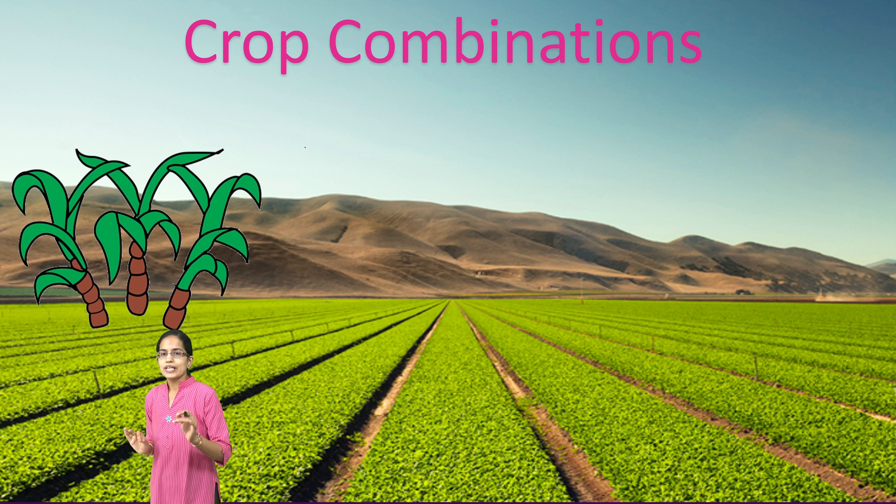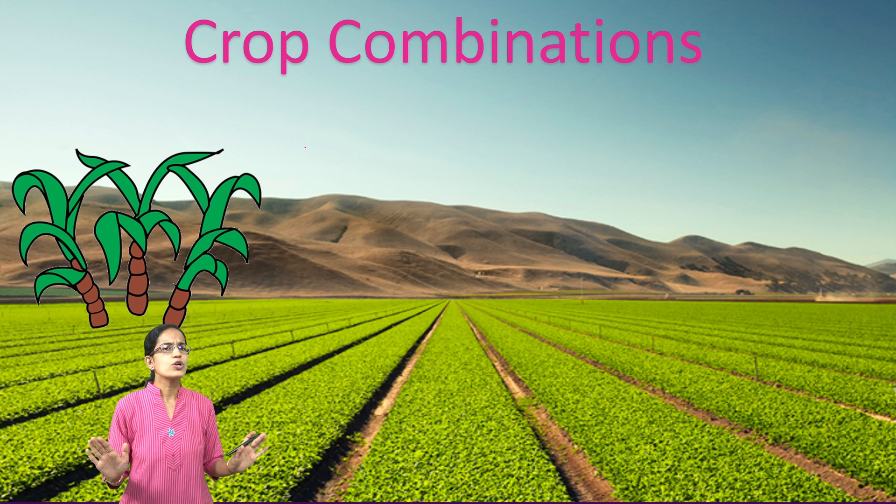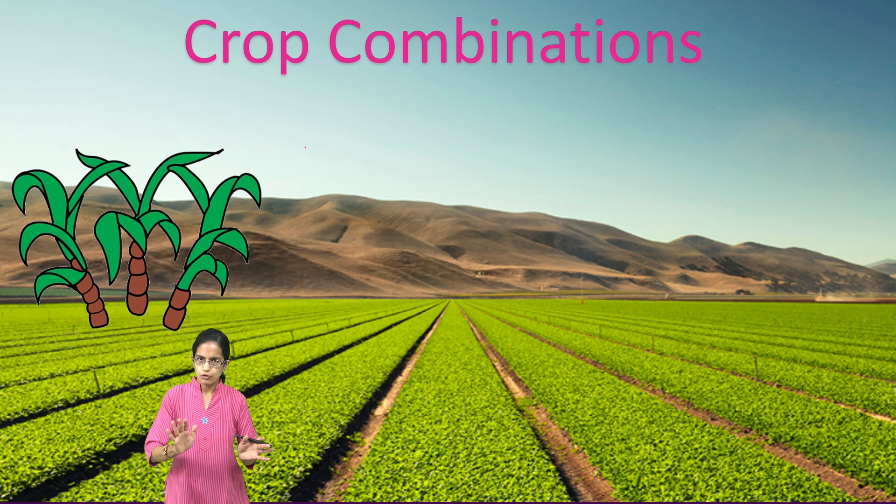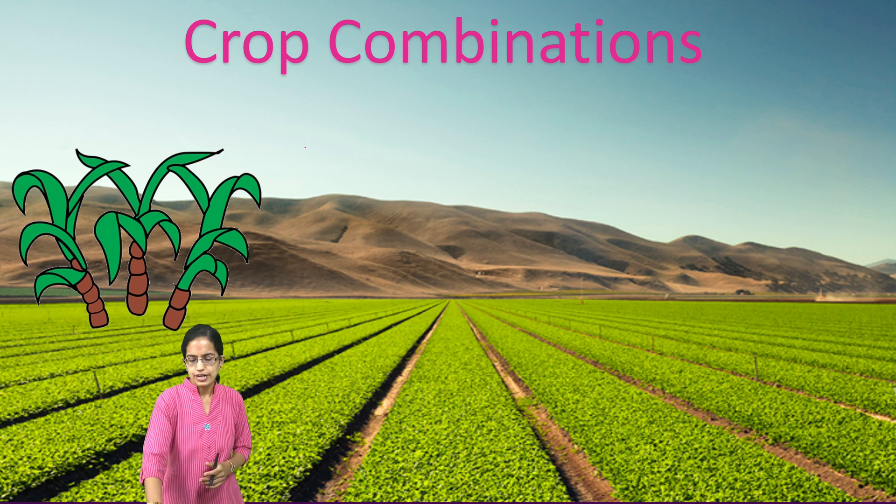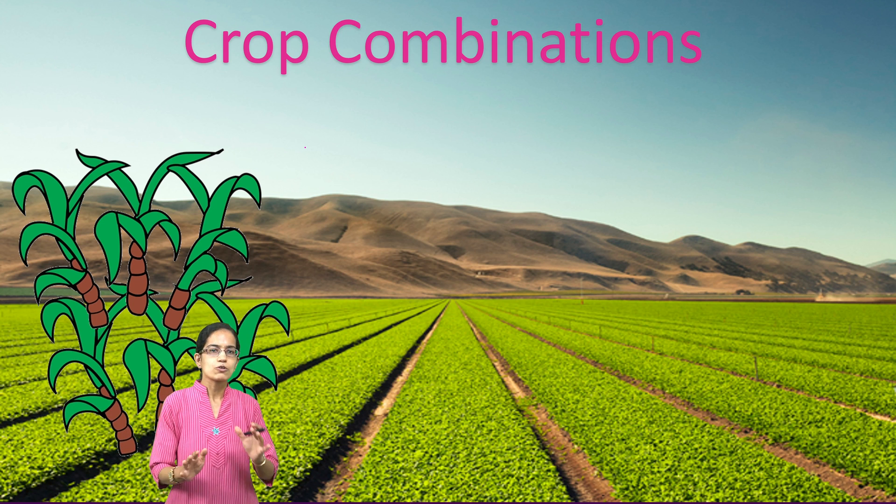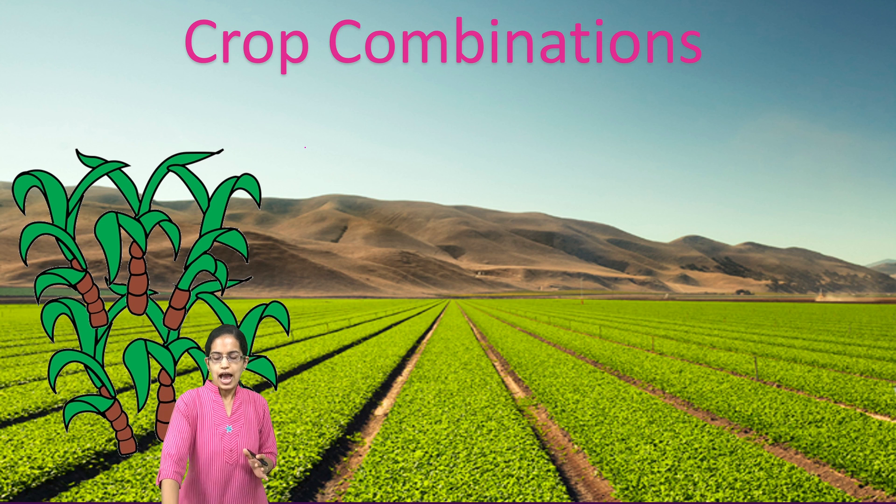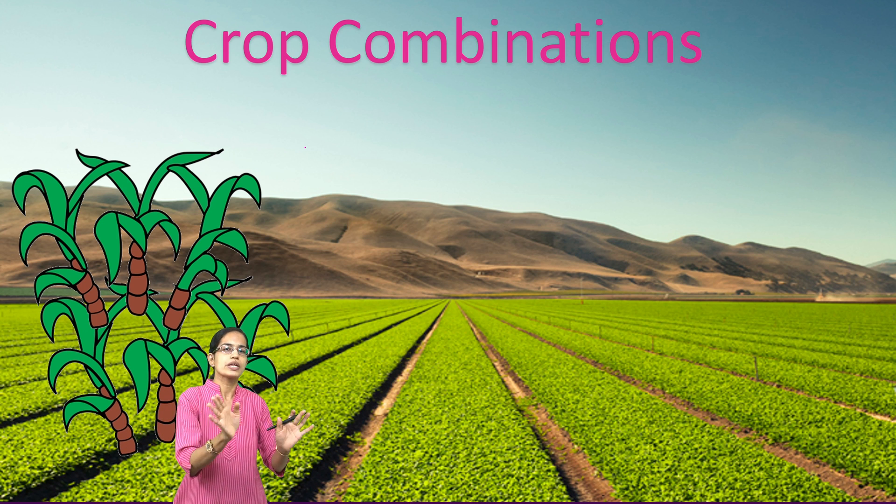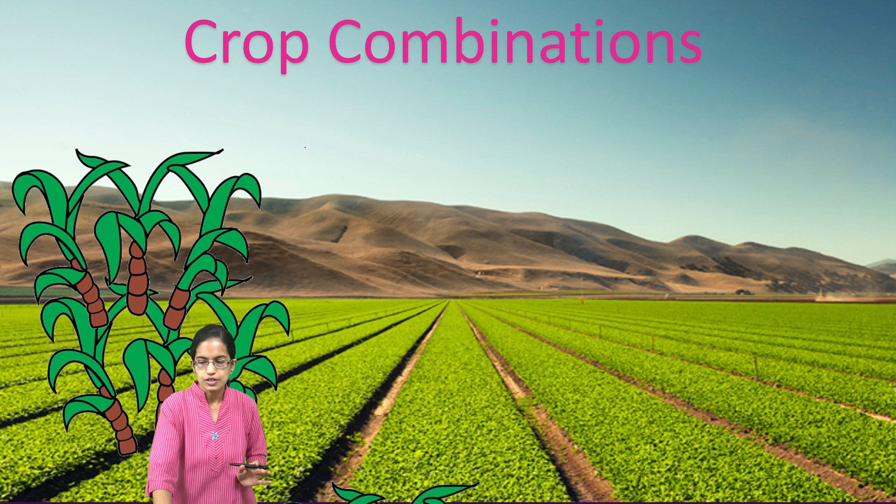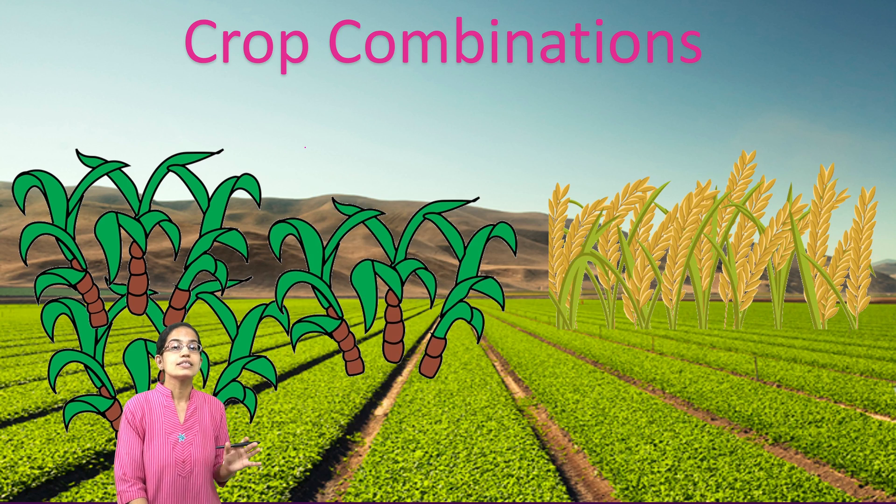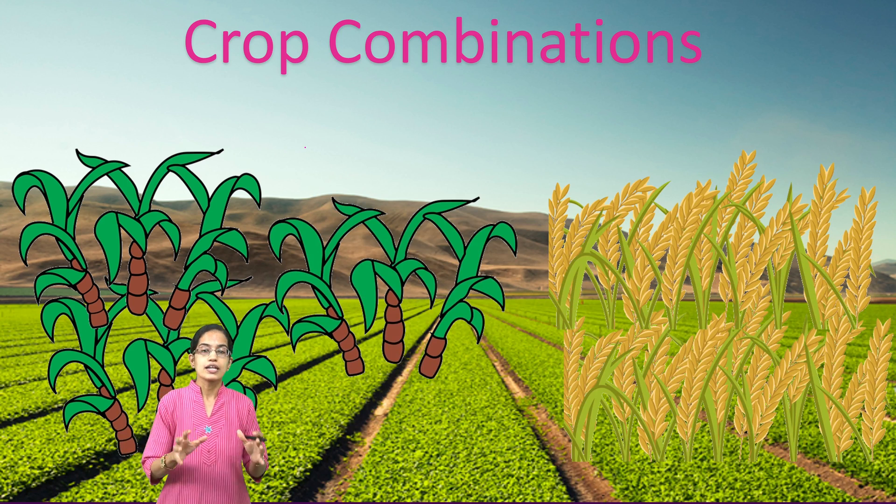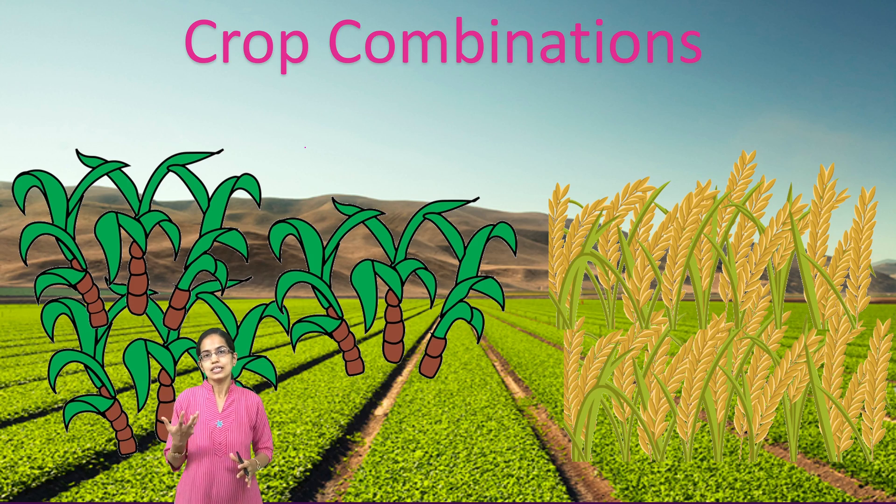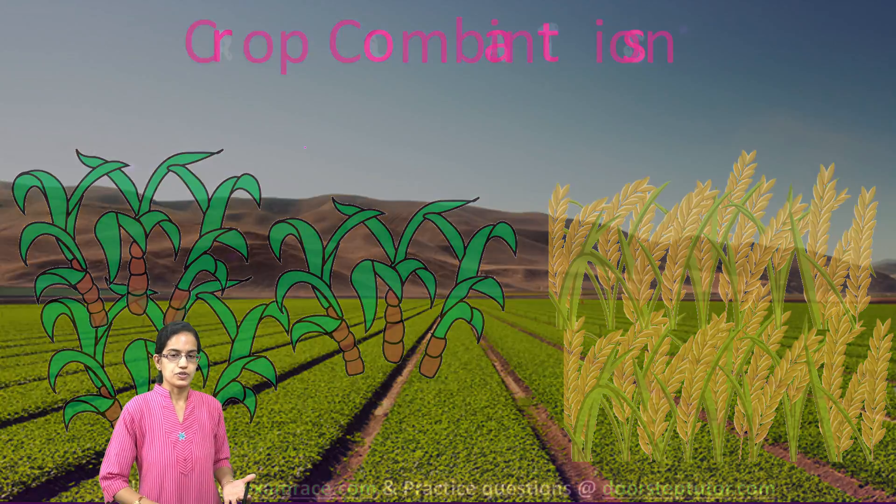When I say crop combination, ideally if I want to grow five crops, I can divide my land parcel simply into five distinct sets. If I have 100 hectares, I can have 20 hectares of five different crops that can be grown. But this is a hypothetical arrangement. What happens in the real world is something different.